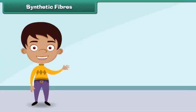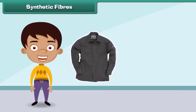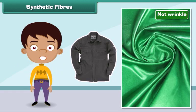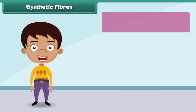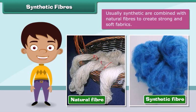Synthetic fibers are man-made. Nylon and polyester are examples of synthetic fibers. Fabric made from synthetic fibers is cheap, dries easily, and does not wrinkle. Usually, synthetic fibers are combined with natural fibers to create strong and soft fabrics.